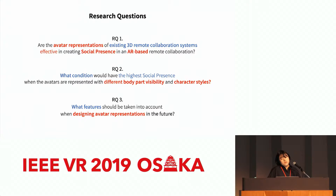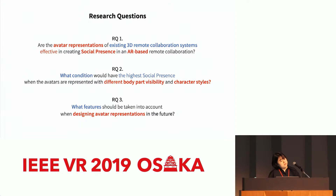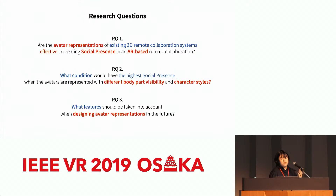We set the following research questions to achieve the main purpose of the research. Research question one: are the avatar representations of existing 3D remote collaboration systems effective in creating social presence in an AR-based remote collaboration? Research question two: what condition would have the highest social presence when avatars are represented with different body part visibility and character styles? Research question three: what features should be taken into account when designing avatar representation in the future?